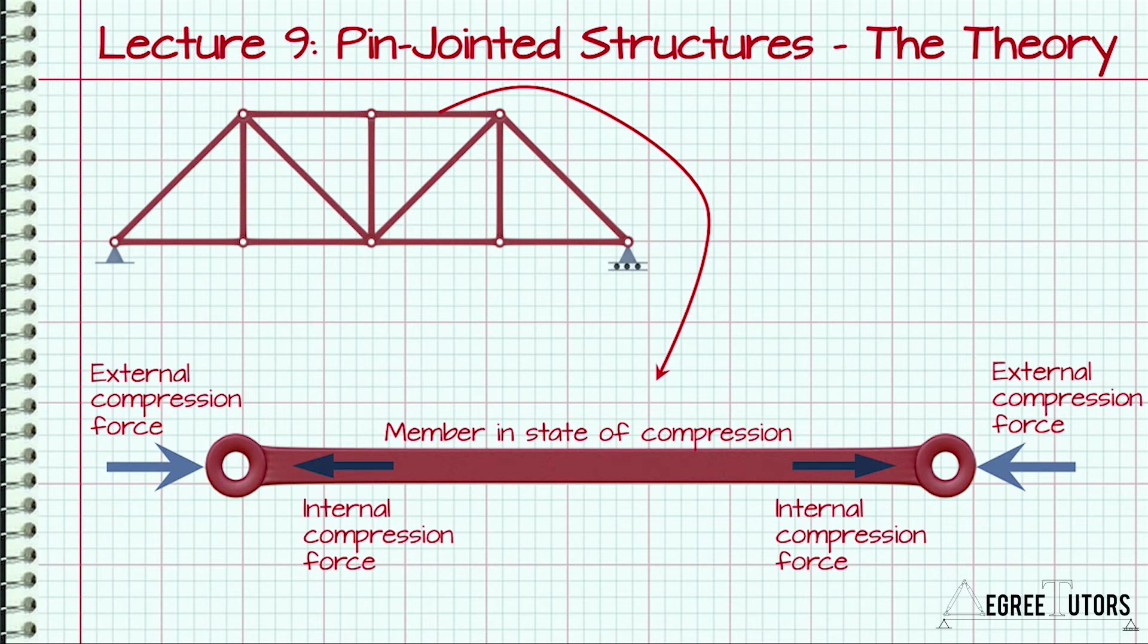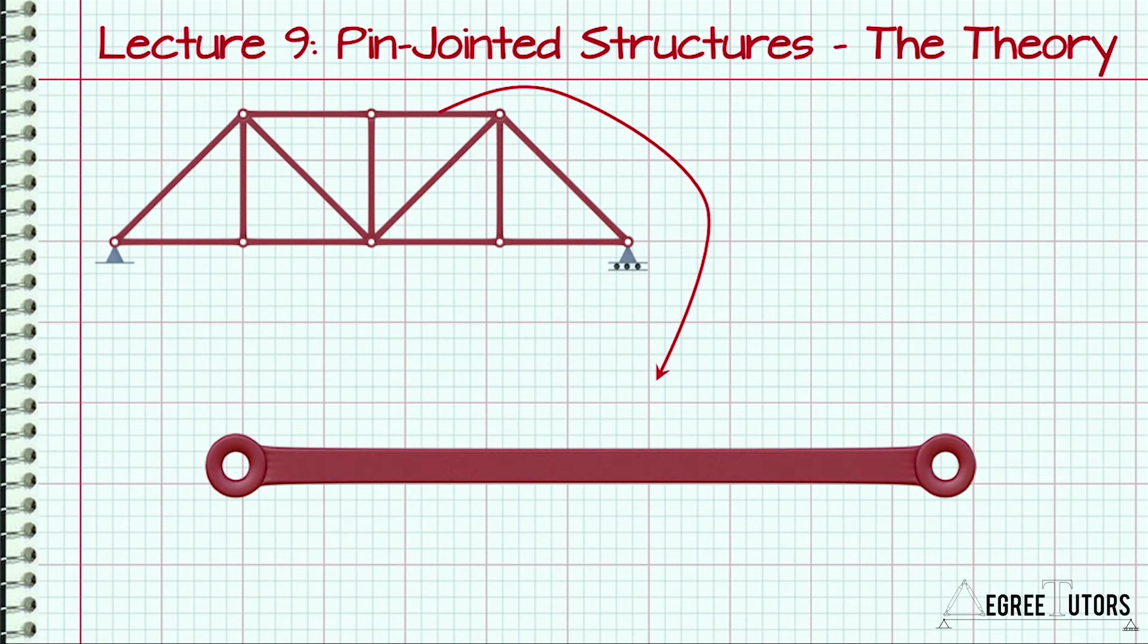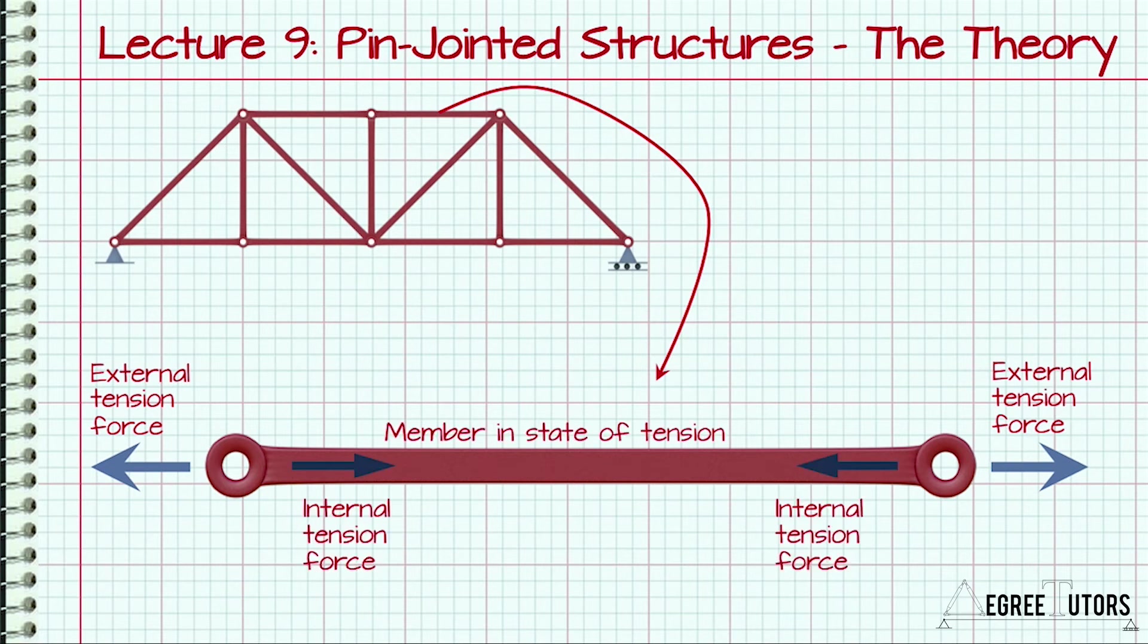Once we know the magnitude and direction of this internal force, we can design the member itself to be big enough to provide this internal reaction. On the other hand, if a tensile force was applied at each end of the member trying to stretch or pull it, an internal force would develop within the member to resist this external force.